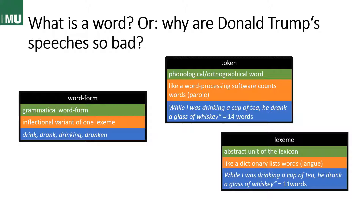And last but not least, we have the lexeme, also called the type, which is the abstract unit of the lexicon. If you want to count the types, you do so by dictionary entries on the langue level. So with the same sentence, we would get 11 words this time, because we only count the articles once — 'a' appears twice but is counted once — and we only count 'drink' and all its word forms once, and 'of' as well.